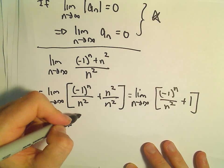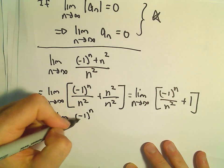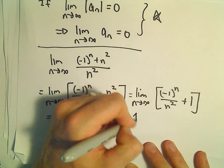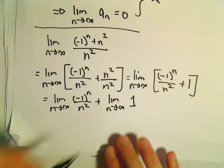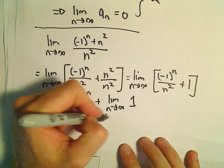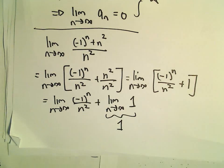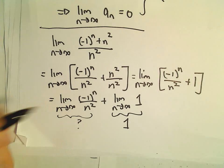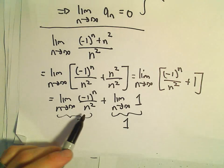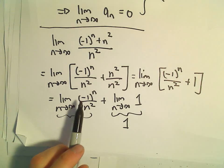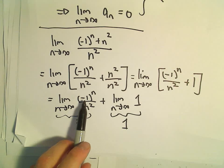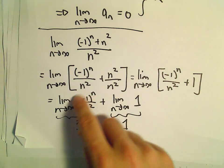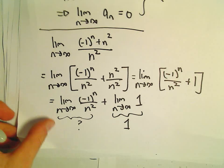We can look at these individually, plus the limit as n goes to infinity of just 1. The limit of a constant is the constant, so that part is just 1. The only thing we really have to think about now is the first term. The top always bounces between negative 1 and positive 1, and the denominator gets arbitrarily large, so this first limit should certainly go to 0.